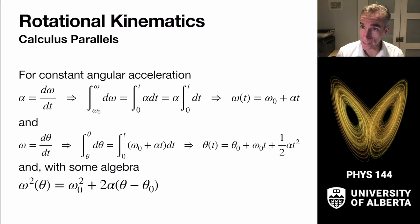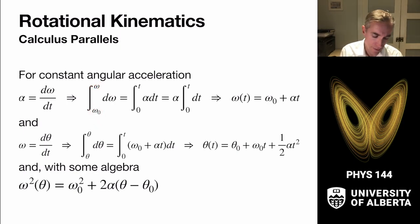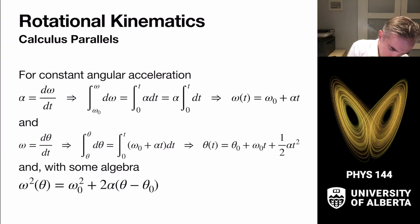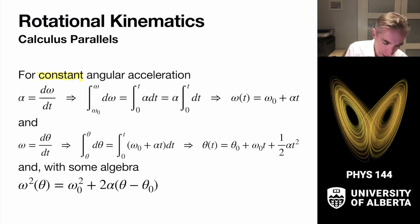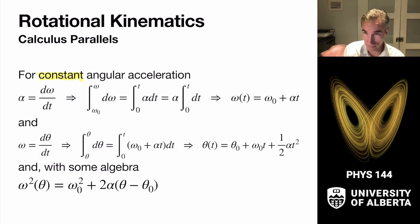Just like for linear kinematics, we can use calculus to relate our angular kinematic quantities. Alpha is d omega by dt. Integrating from some initial angular speed to the current angular speed gives the integral from zero to t of alpha dt. For constant angular acceleration, we pull alpha out of the integral and get omega equals omega naught plus alpha t — just like in a linear kinematics problem, except with omegas.